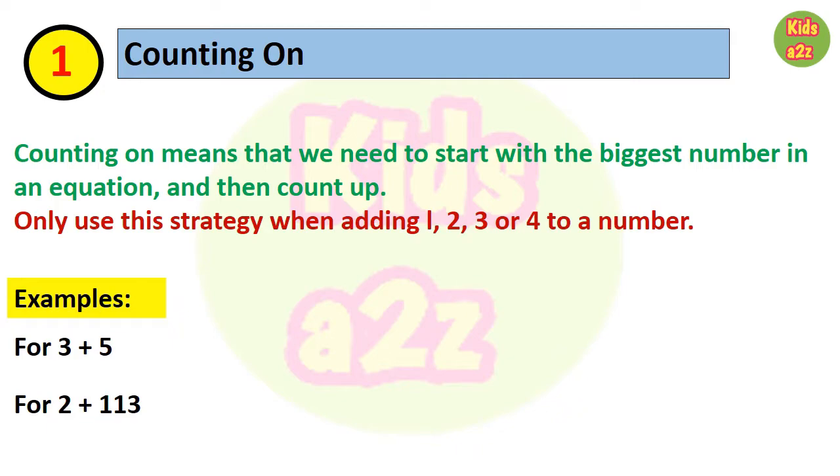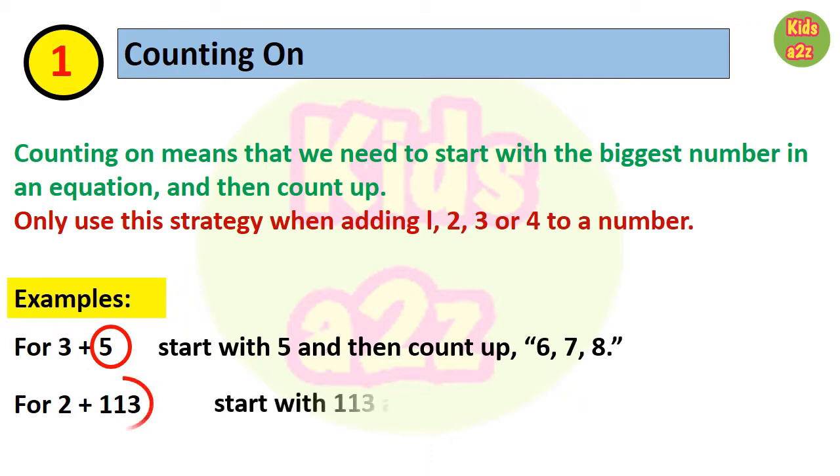For example, for 3 plus 5, we need to start with the biggest number, that is 5, and then count up 3: 6, 7, 8. Similarly, for 2 plus 113, we need to start with 113 and then count up: 114, 115.